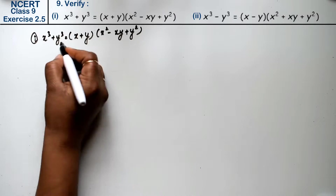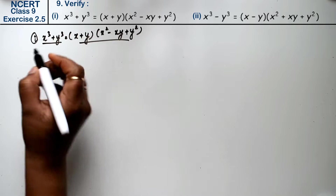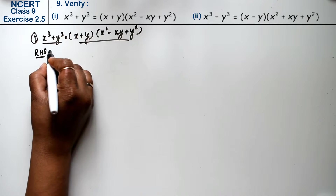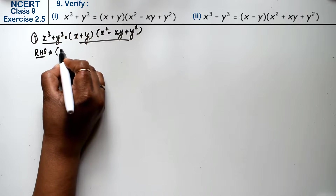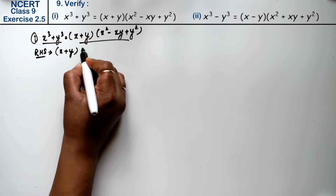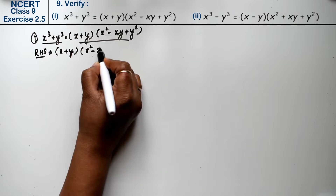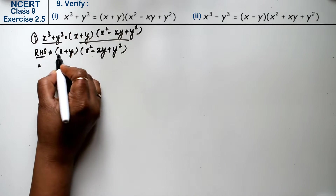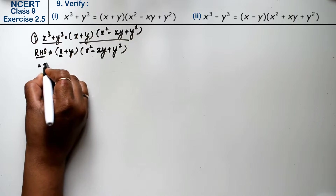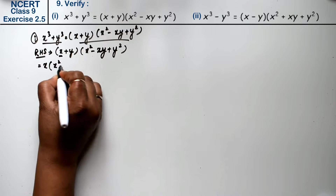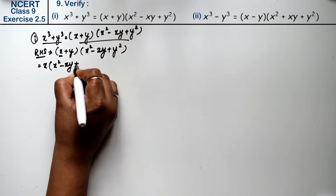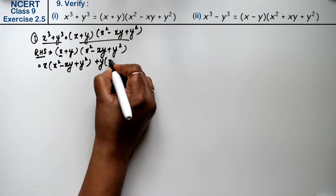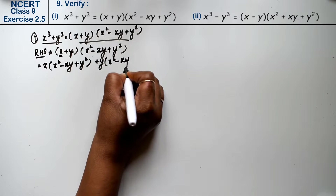We have to verify this. The left-hand side is x³ + y³ and the right-hand side is (x + y)(x² - xy + y²). I am proving from the right-hand side. Opening the brackets: multiplying x into the full bracket x² - xy + y², then plus y multiplied into x² - xy + y².